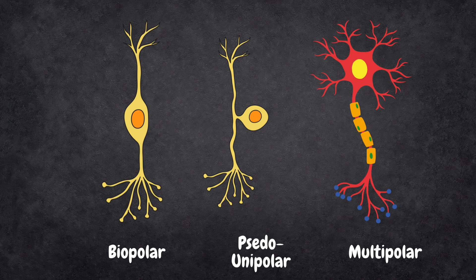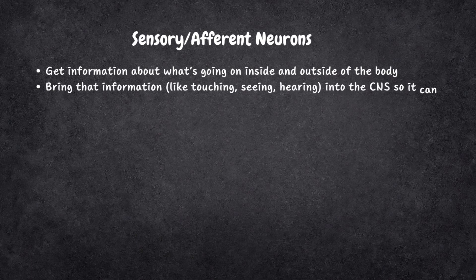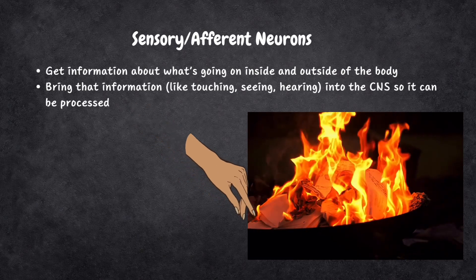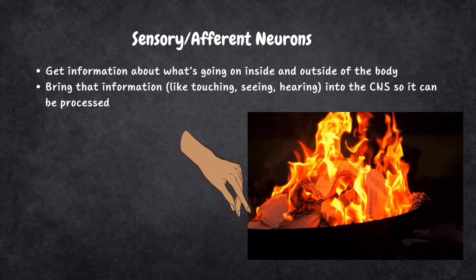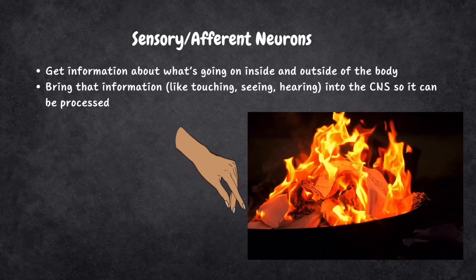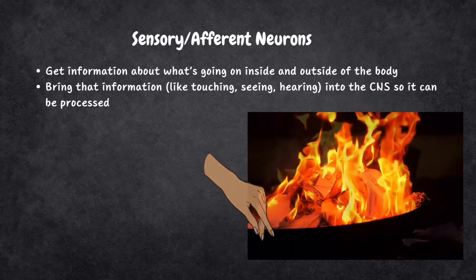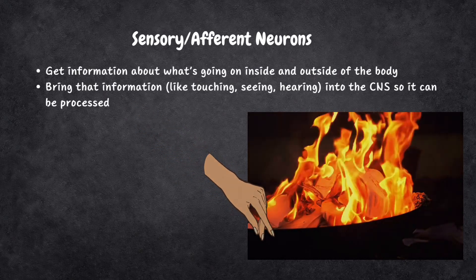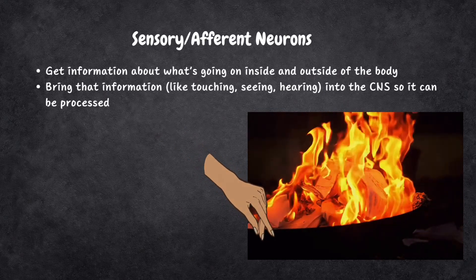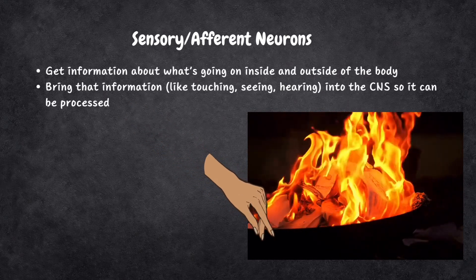These different structural arrangements allow neurons to fulfill various roles in transmitting and processing information within the nervous system. Neurons are like messengers in our body that help us feel, move and think. Categorized by function, one type is the sensory neuron, also called the afferent neuron. It gets information about what's going on inside and outside the body and brings that information — like touch, sight and hearing — into the central nervous system so it can be processed. For example, if you picked up a hot coal, sensory neurons with endings in your fingertips would convey the information to your CNS that it was really hot.